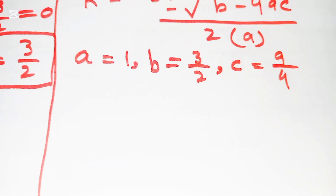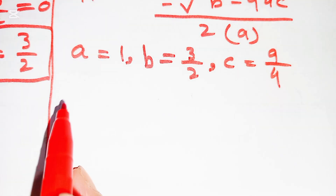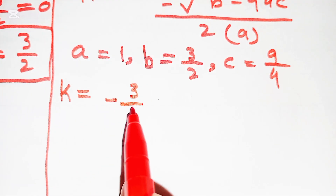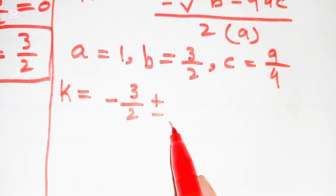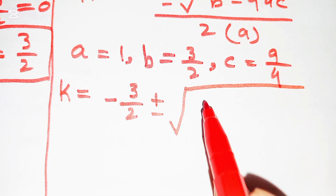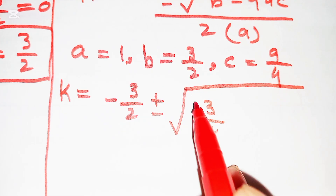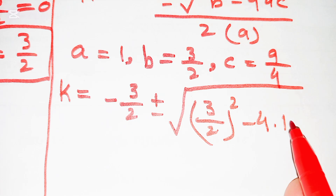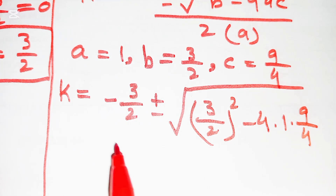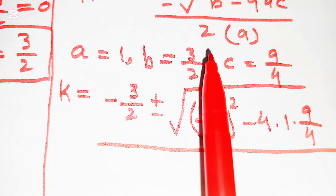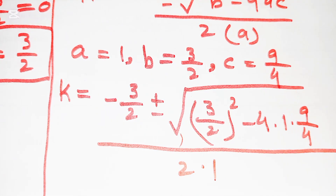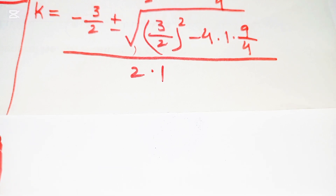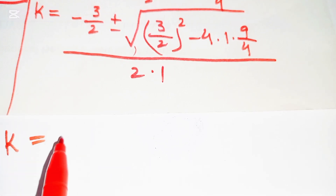Substituting, k = (−3/2 ± √((3/2)² − 4·1·(9/4))) / (2·1). We compute (3/2)² = 9/4, and 4·1·(9/4) gives 9/4 in the denominator with the 4 cancelling.